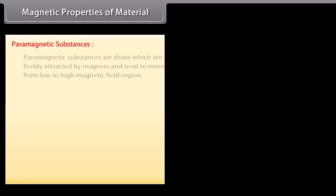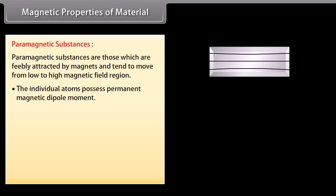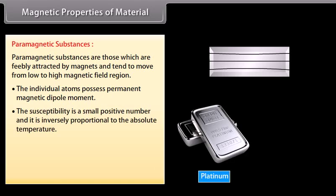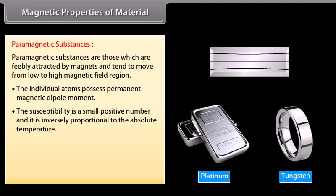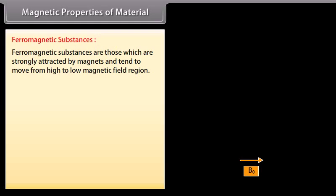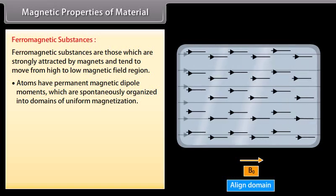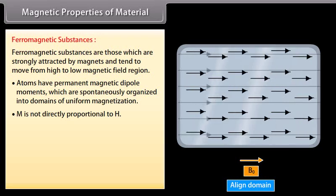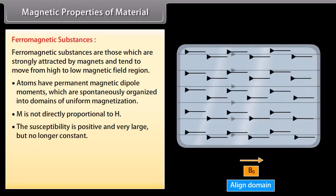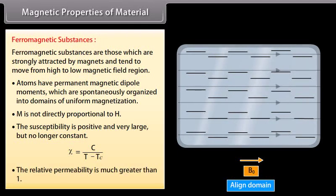Paramagnetic substances are feebly attracted by magnets and tend to move from low to high magnetic field regions. Individual atoms possess permanent magnetic dipole moments. The susceptibility is a small positive number, inversely proportional to absolute temperature: χ = C/T. The relative permeability is slightly greater than 1. Ferromagnetic substances are strongly attracted by magnets; atoms have permanent magnetic dipole moments spontaneously organized into domains of uniform magnetization. M is not directly proportional to H. Susceptibility is positive and very large: χ = C/(T − TC). Relative permeability is much greater than 1.